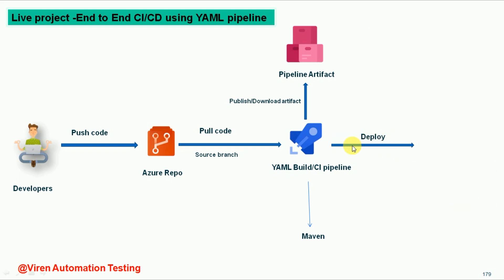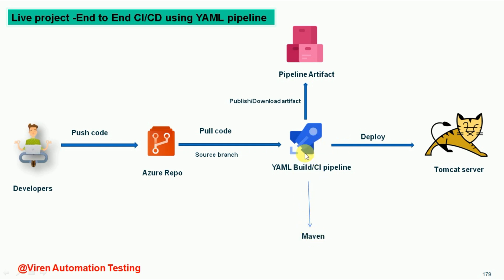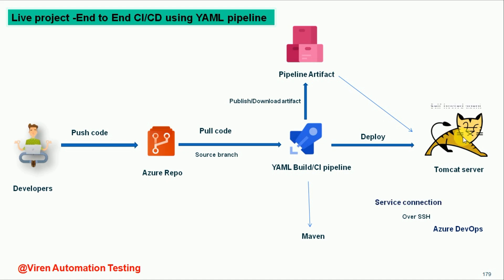For our project I am going to create an AWS EC2 instance machine. This machine is a Linux VM where we are going to deploy our application. We are going to set up Apache Tomcat on that VM machine. The Tomcat server is the deployment server where we have the webapps folder, and into that webapps folder I am going to deploy our .war file generated by Maven. This Tomcat server machine set up on the AWS EC2 Linux machine will behave like a self-hosted agent, and the pipeline artifacts are going to be deployed on this Tomcat server.